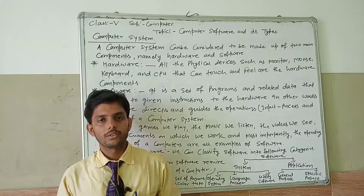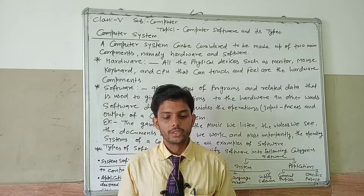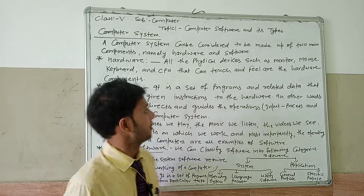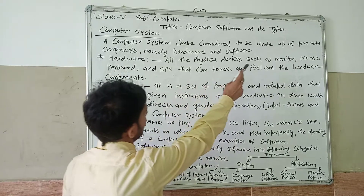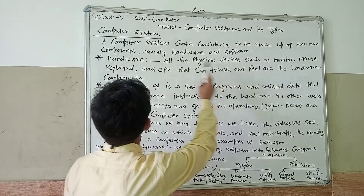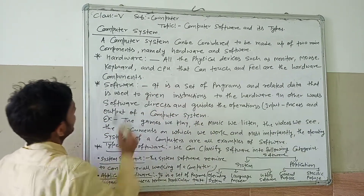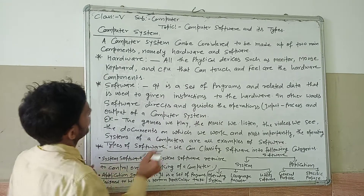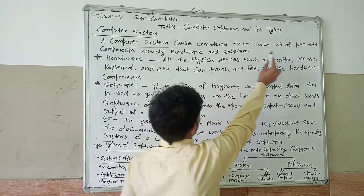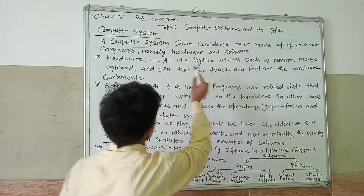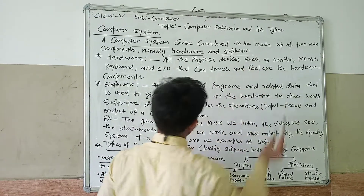First of all, how we discuss about computer software. A computer system can be considered to be made up of two main components: first is hardware and second is software.